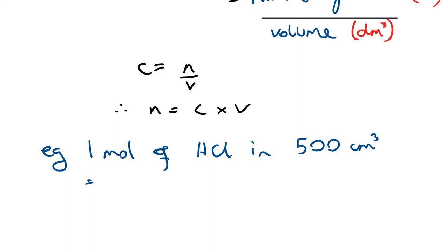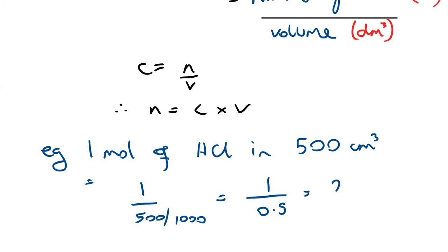So if you wanted to work out the concentration of 1 mole of HCl in 500 centimeters cubed, it's going to be 1 divided by 500 cm³ converted into decimeters cubed, which is 500 divided by 1,000. So that equals 1 divided by 0.5, which equals 2 mol dm⁻³ — that's the concentration.